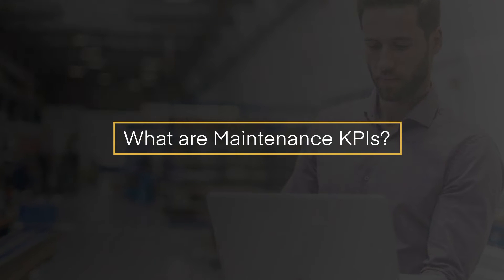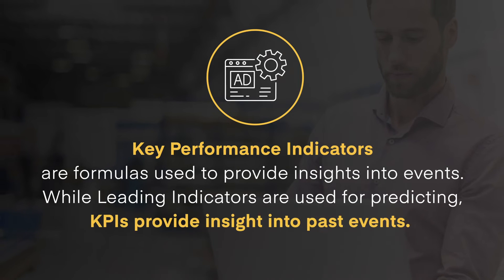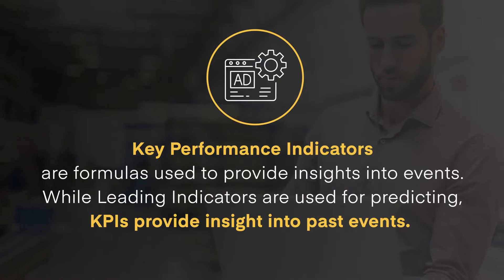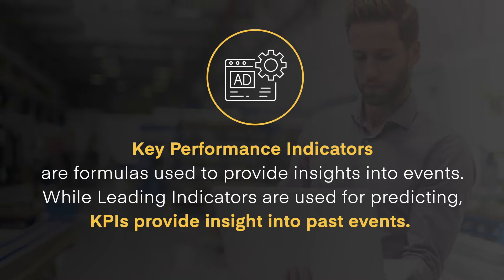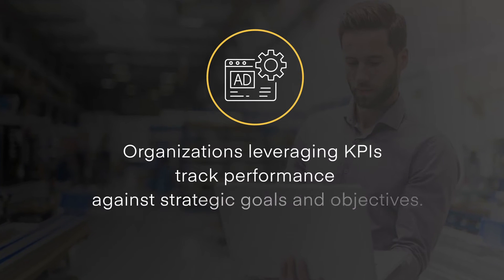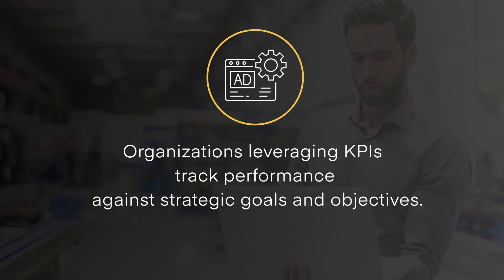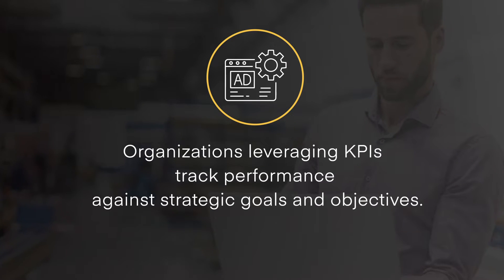What are maintenance KPIs? Key performance indicators are formulas used to provide insights into events, while leading indicators are used for predicting. KPIs provide insight into past events. Organizations leveraging KPIs track performance against strategic goals and objectives.